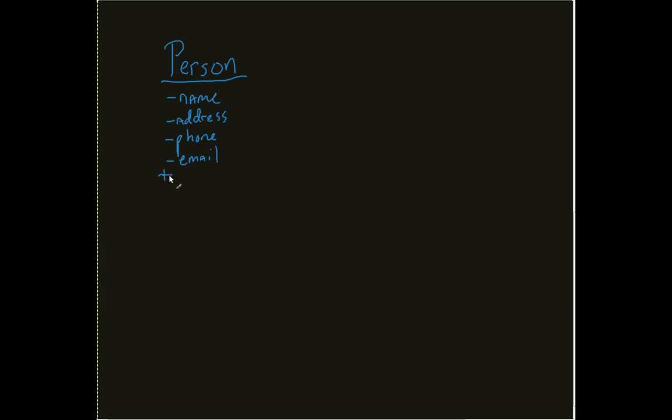And then it probably has some person constructor and then a few of his getters. So I'll just say get dot dot. Now again, person, very generic, very conceptually generic thing.